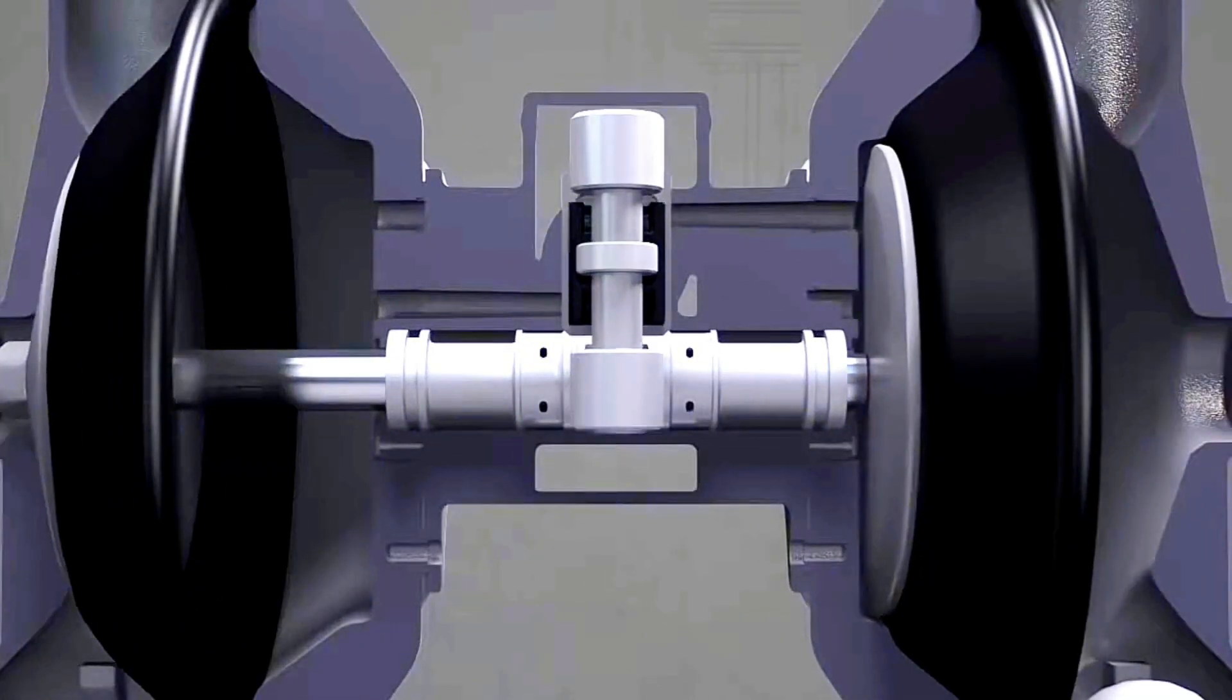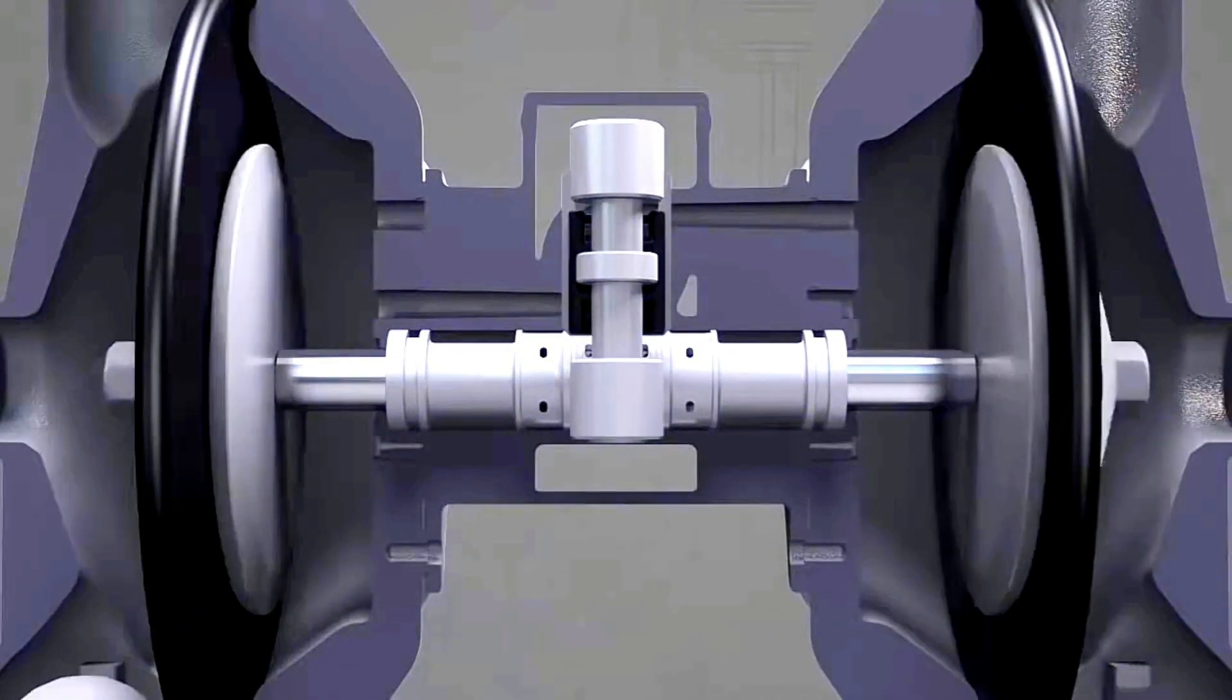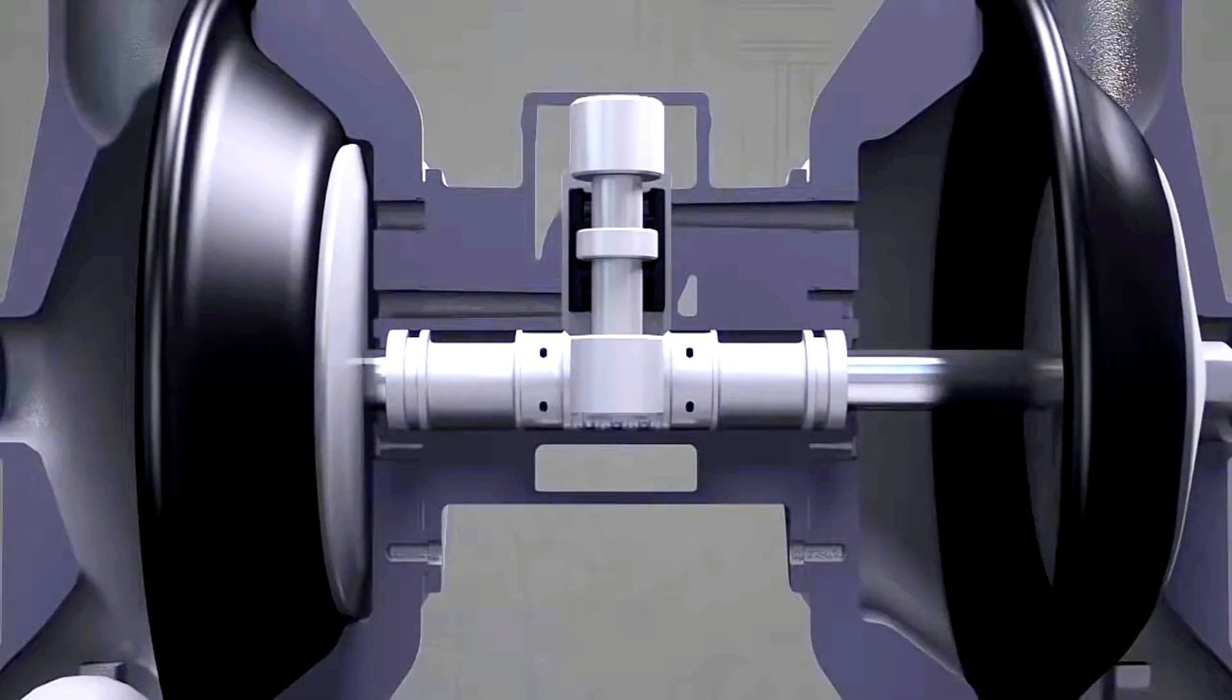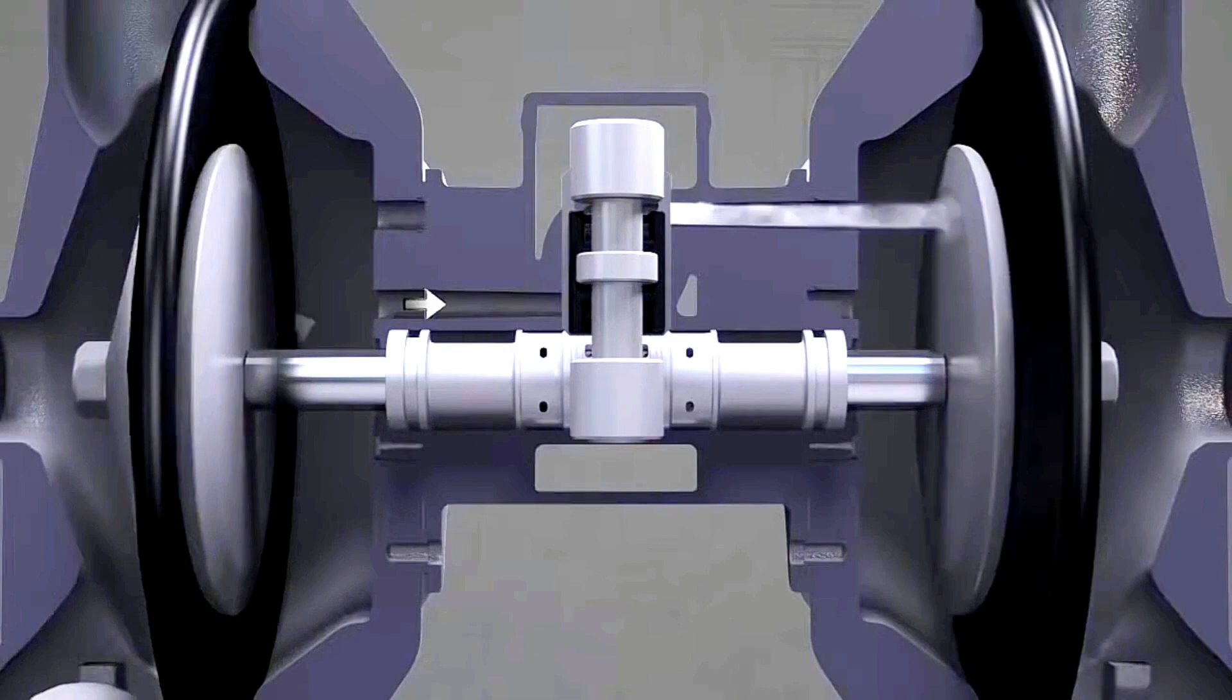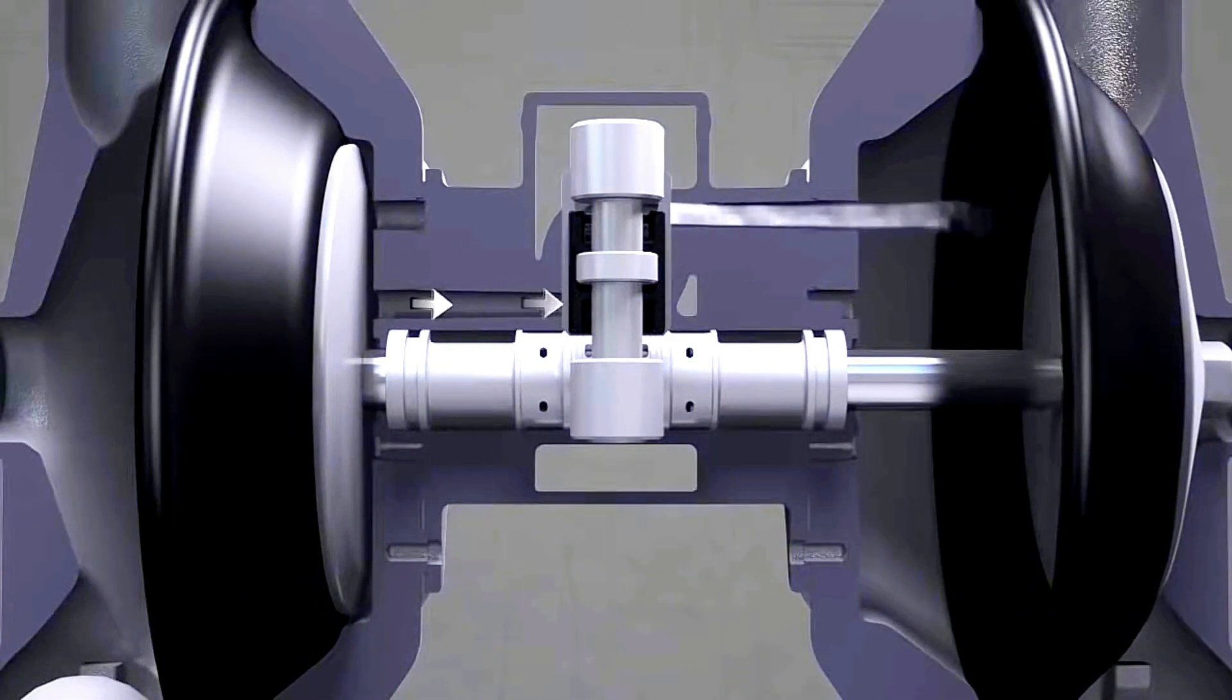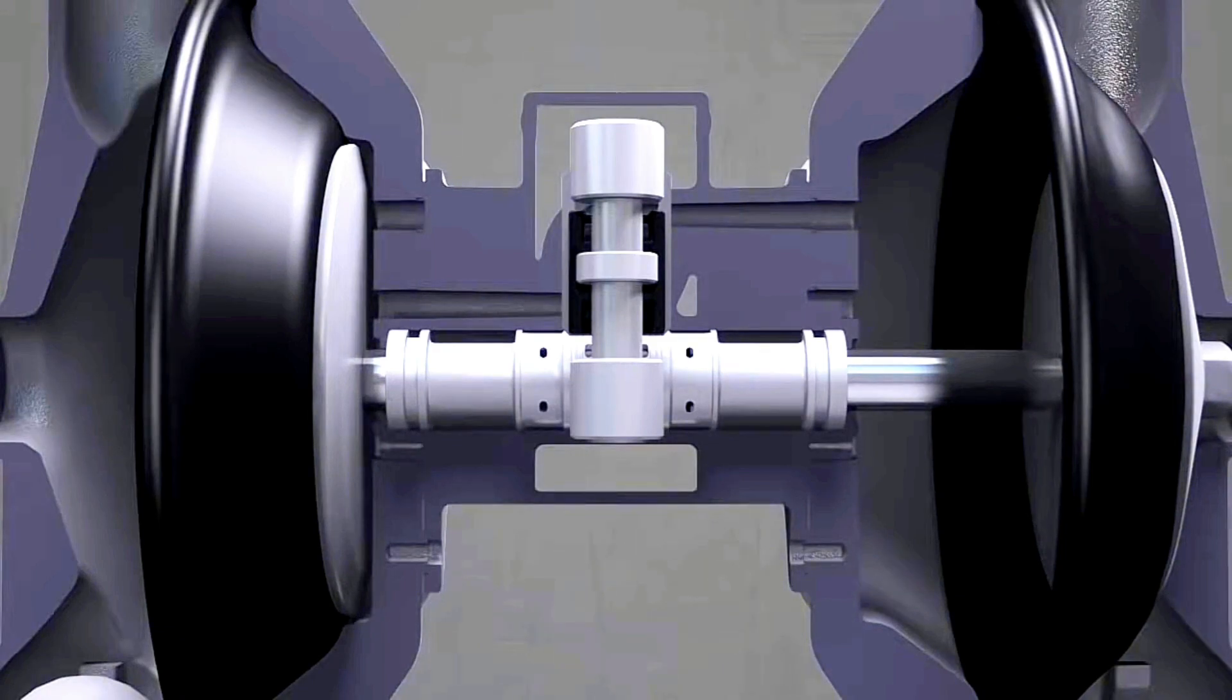When air pressure is applied to the pump, the main air valve moves up and down. When the main air valve is in the down position, air pressure is diverted to the right diaphragm. At the same time, exhaust air from the left diaphragm passes through the shuttle and shuttle plate and exits the rear of the pump.